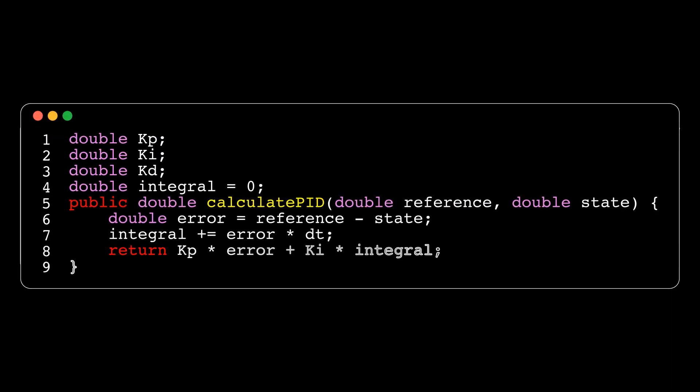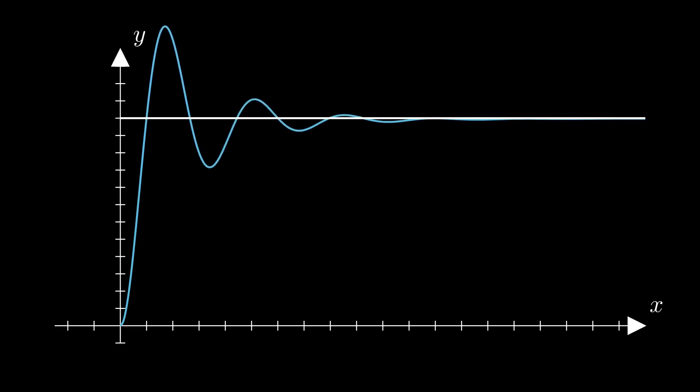We can add an integrator to combat this friction, making this a PI controller. This integral sums the total error over time and ensures that we arrive at zero steady state error.